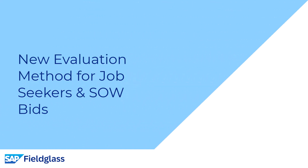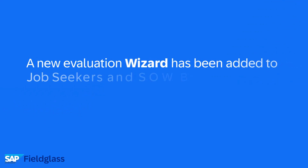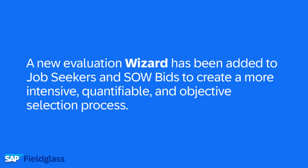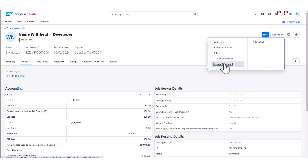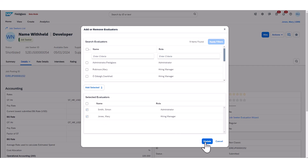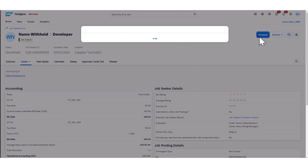Next up, we have a new evaluation method for job seekers and statement of work bids. A new evaluation wizard has been added to job seekers and SOW bids to create a more intensive, quantifiable, and objective selection process. Let's jump into the app to take a look at this feature in action. Users can easily manage evaluators, and once the correct users are added, they can evaluate the job seeker or SOW bid response.